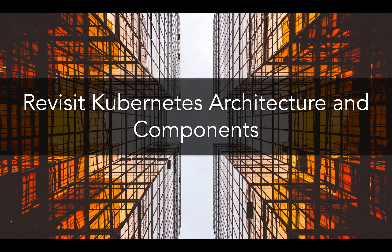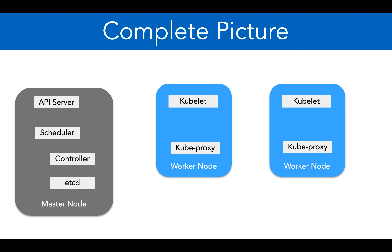Now that we have understood the concept of pods, let's revisit the Kubernetes architecture and components one more time. In this section I'll be able to give you a complete picture of how all the Kubernetes components are tied together and how they work. We already are familiar with this diagram - the master node and then we have two worker nodes. Of course there could be more worker nodes, but I am using two worker nodes for reference. The master node has four components.